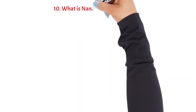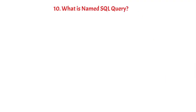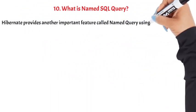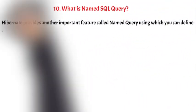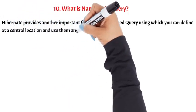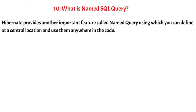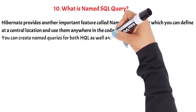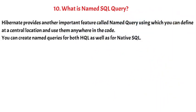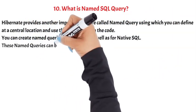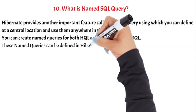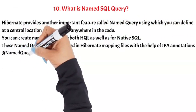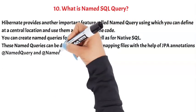Question 10: What is a named SQL query? Hibernate provides another important feature called named query, using which you can define queries at a central location and use them anywhere in the code. You can create named queries for both HQL as well as native SQL. These named queries can be defined in Hibernate mapping files with the help of JPA annotations @NamedQuery and @NamedNativeQuery.